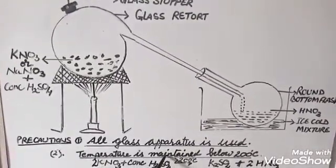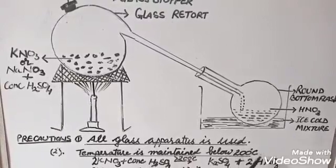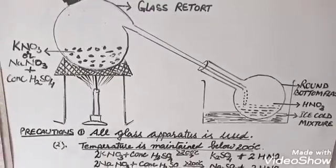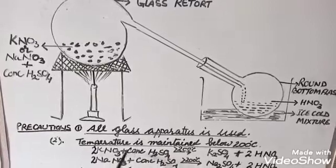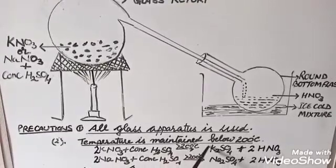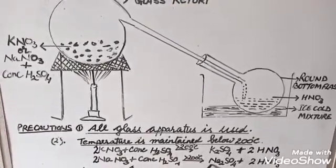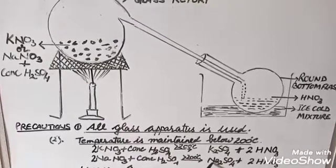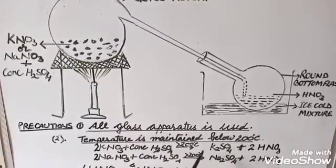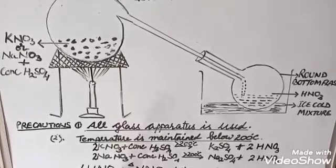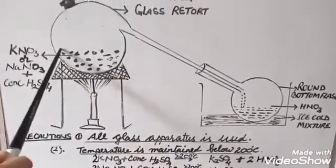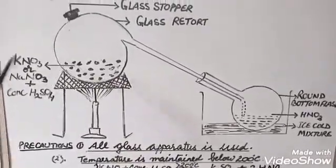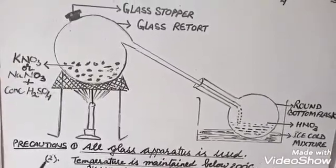Secondly, temperature is maintained below 200 degrees Celsius because above 200 degrees Celsius, potassium sulfate or sodium sulfate gets formed which has a tendency to stick to the glass and make it unfit for further use.